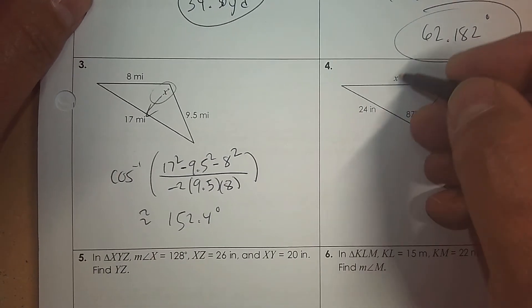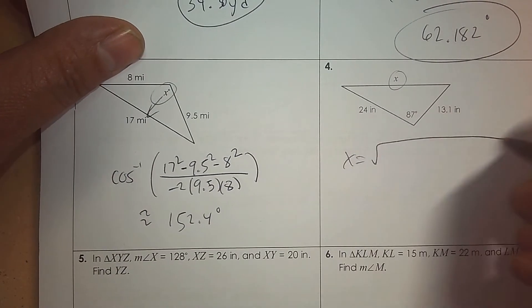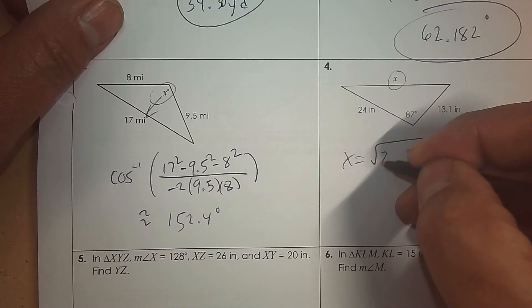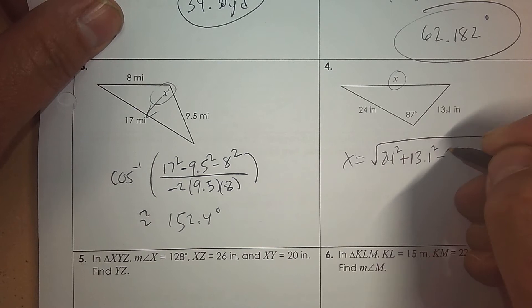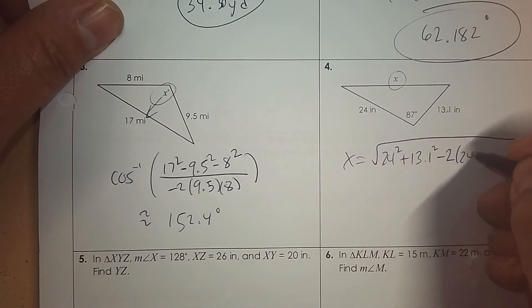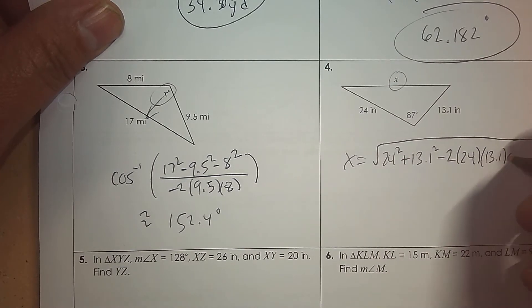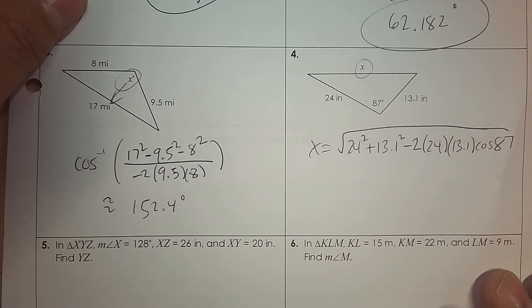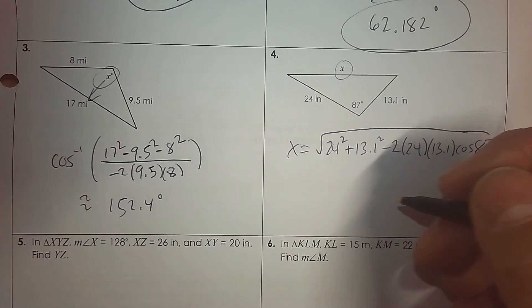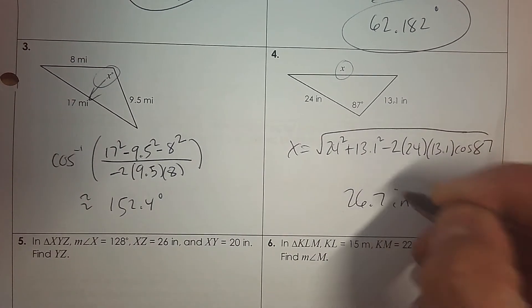Number 4, I want to find the missing side. Big square root. So order doesn't matter. Pick a side, square it, plus pick the other side and square it. Subtract 2 as part of the formula. Repeat. 24 and 13.1. And then the cosine of the angle in between them, which is 87. And that's it. And you get about 26.7 out of that.